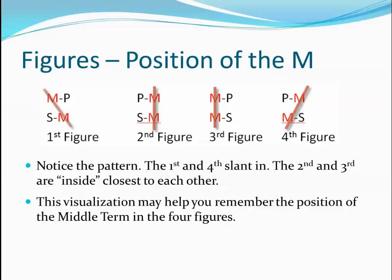The logical properties of syllogisms are determined by the characteristics of the categorical claims — the A, E, I, and O claims. So if you know the quality, the quantity, and the distribution of the standard claims, and the mood and figure of the syllogism, it is possible to judge the validity of a syllogism at a glance. That skill will be the subject of another tutorial.